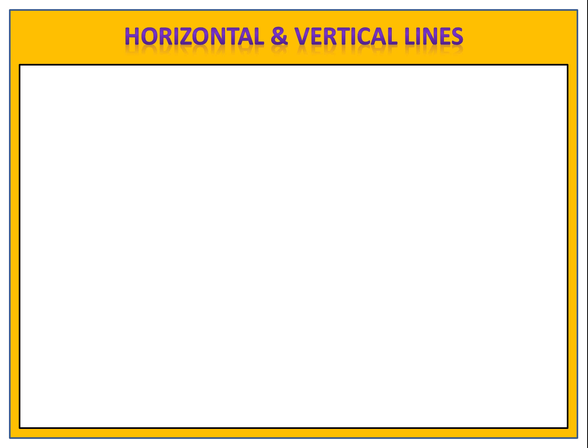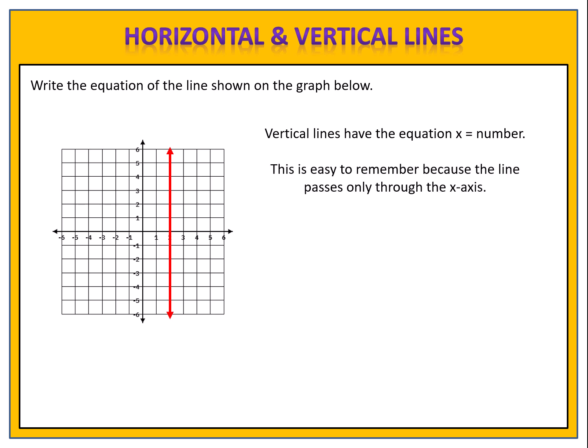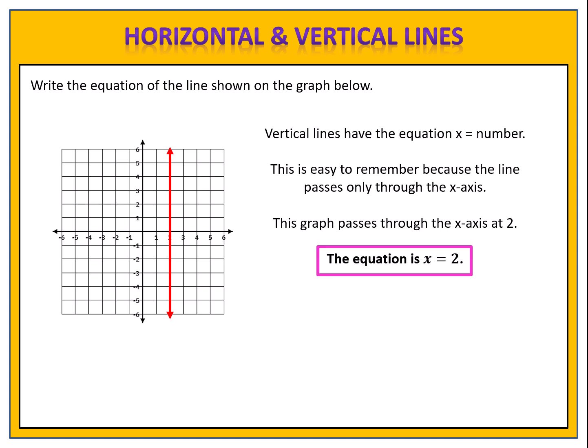Next, let's take a look at a vertical line. Write the equation of the line shown on the graph below. Remember, vertical lines have the equation x equals a number. This is easy to remember because the line passes only through the x-axis. This particular graph passes through the x-axis at 2, which means the equation is x equals 2.